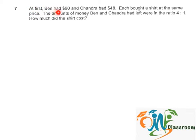At first, Ben had $90 and Chandra had $48. Each bought a shirt at the same price. The amount of money Ben and Chandra had left were in the ratio 4 is to 1. How much did the shirt cost?